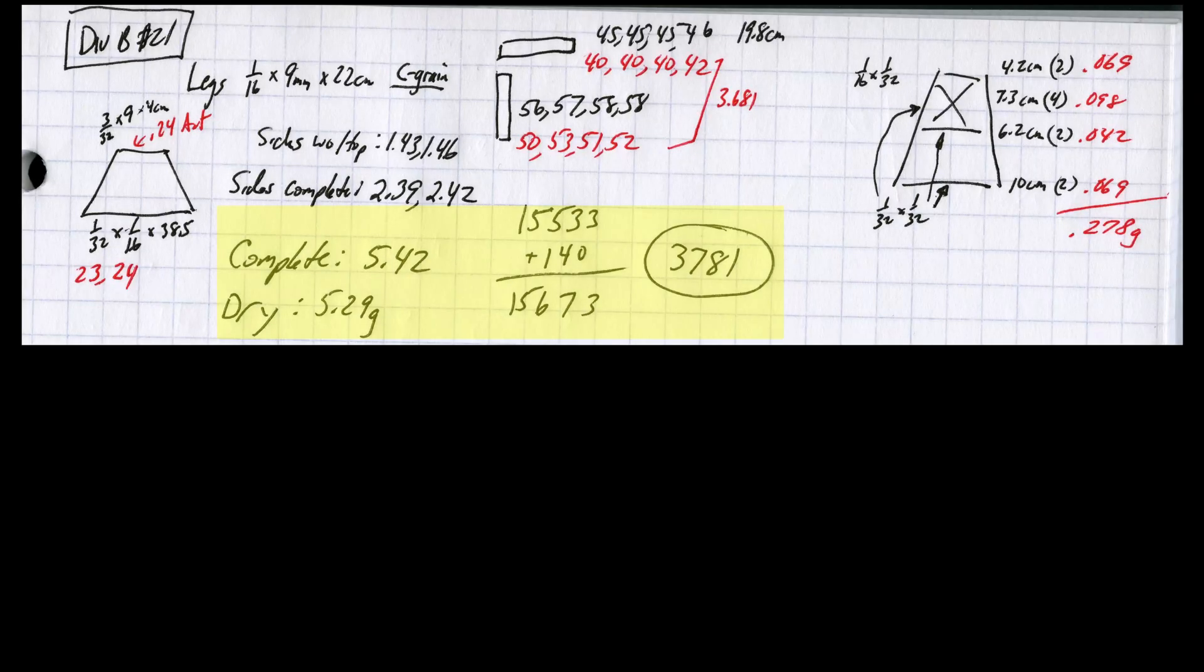Here's my best result, build number 21. It weighed 5.29 grams and held 15.67 kilograms for a competition score of 3781. All the cross members and tension pieces were meant to be identical to the previous build. For people looking closely, you might have already seen what makes this build so special.